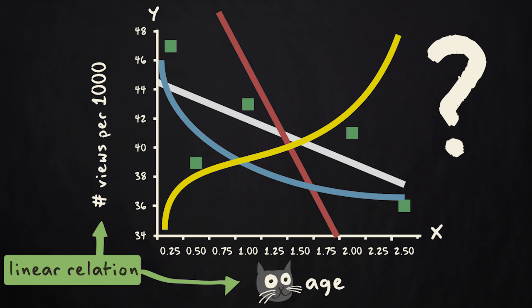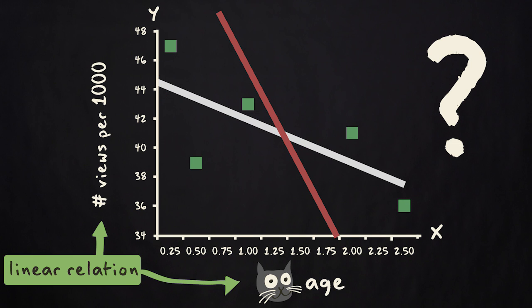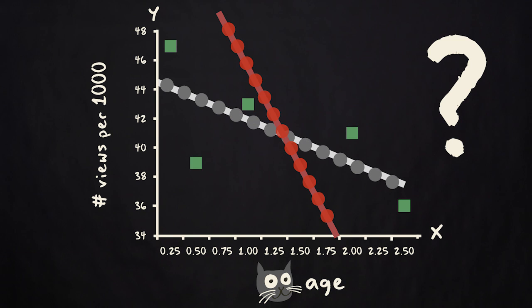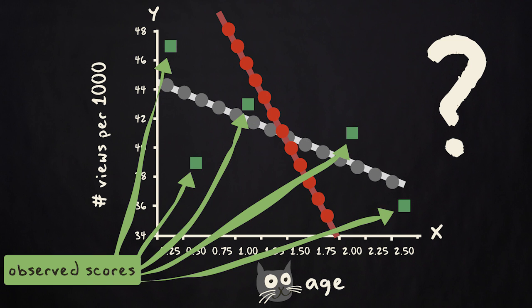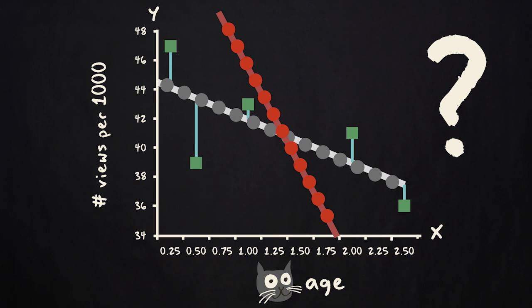In simple linear regression, we assume the relation between the predictor and the response variable is linear. So first of all, the line must be straight. Second, we get the best predictions from the line that produces predicted scores that lie as close as possible to the observed scores. So we need to find the straight line that minimizes the distance between observed and predicted scores for all the cases in our sample.